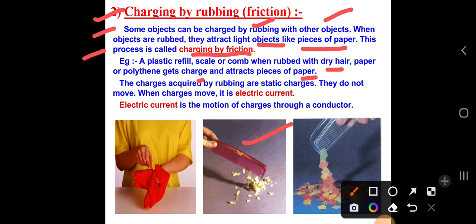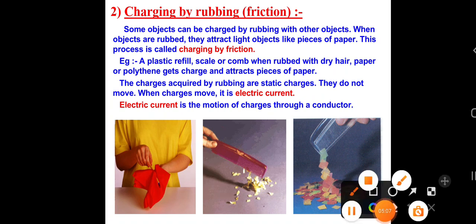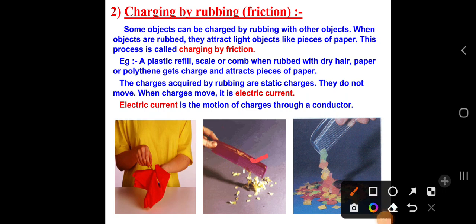The charges acquired by rubbing are static charges — they do not move. When charges move, it is called electric current. Whatever charges are produced here, they stay on the object itself and will not move. If the electric charges move, that is nothing but electric current.